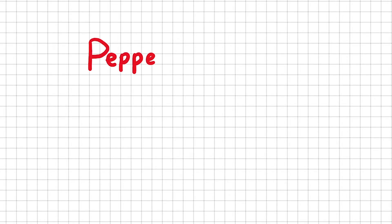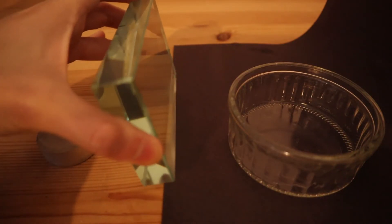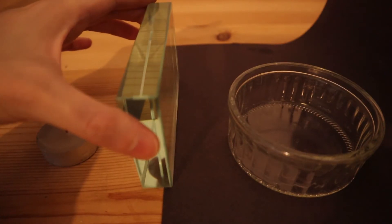This experiment is known as Pepper's Ghost because that was a technique traditionally used in theater production to produce ghostly effects. Place your candle in front of the sheet of glass. Place the container on the other side.